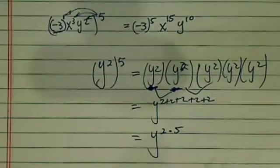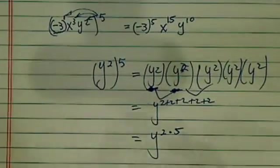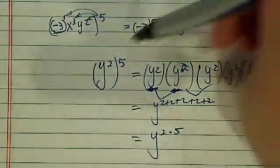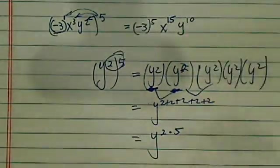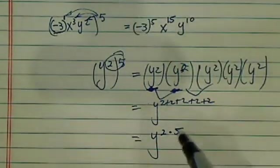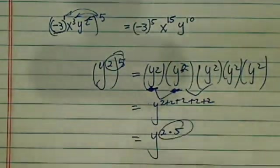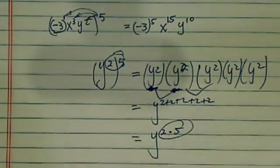So basically the rule you're trying to memorize is just a shortcut. If you have just one base, just multiply the exponents.